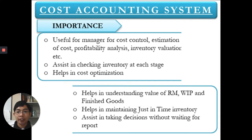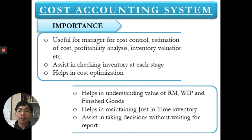It also assists managers in checking inventory at each stage. You need to check your inventory when you manufacture certain products — how many raw materials are still available, how much are in process, and how many products are already finished and can be shipped to your customers. It also helps in cost optimization. When it comes to manufacturing, you need to lower your cost in order to maximize your profit. That is the objective of management accounting.